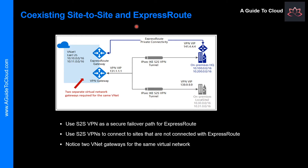Let's learn about coexisting site-to-site and ExpressRoute. ExpressRoute is a direct and private connection from your WAN to Microsoft services, including Azure. Site-to-site VPN traffic travels encrypted over public internet. Being able to configure site-to-site VPN and ExpressRoute for the same virtual network has several advantages. You can configure site-to-site VPN as a secure failover path for ExpressRoute, or use site-to-site VPN to connect to sites that are not part of your network but are connected through ExpressRoute. Note that this configuration requires two virtual network gateways — one using the type VPN and the other using ExpressRoute gateway.